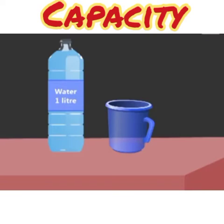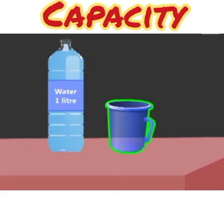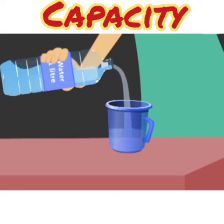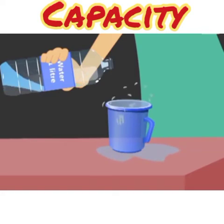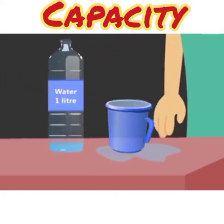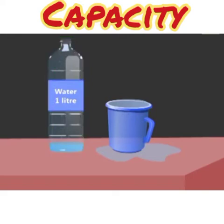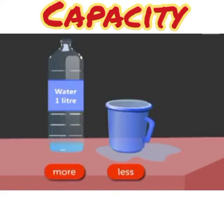Now look, children. Here you can see a bottle and a mug. We will start pouring water from the bottle into the mug. You see that the water overflows — it flows down. Because the capacity of the mug is less than the capacity of the bottle. The bottle can hold more water, but the mug can hold less water.